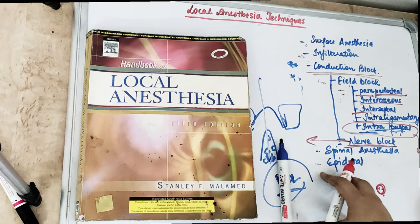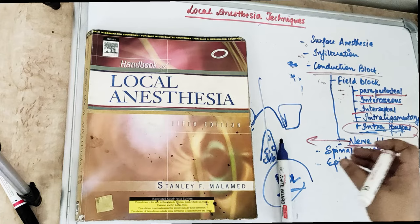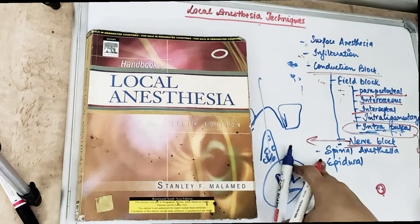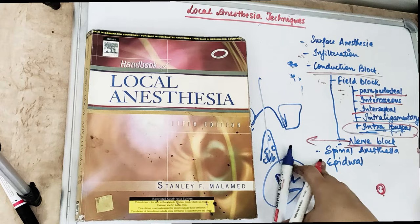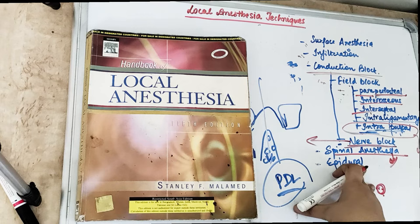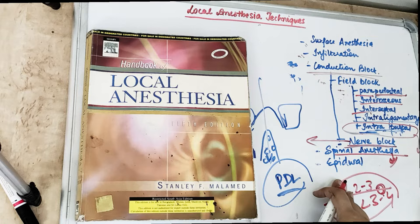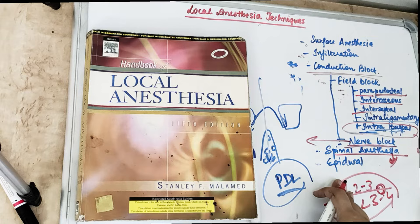The nerve block is where we anesthetize the nerve trunk — injecting around the nerve trunk and into the muscle in which the nerve is innervated. A large volume of drug is required. Spinal anesthesia is injected into the subarachnoid space at the vertebrae L2-L3, between L2-L3 and L3-L4. Epidural anesthesia is injected into the epidural space — the spinal dural space.